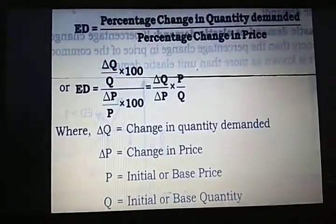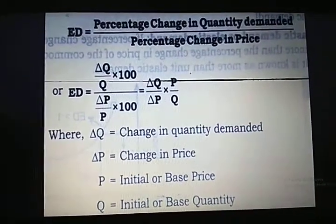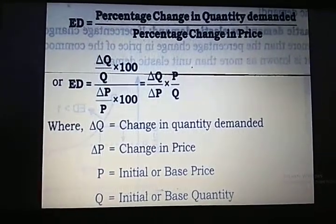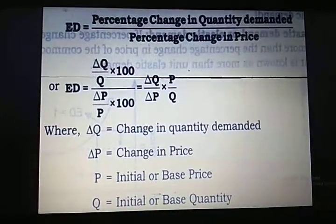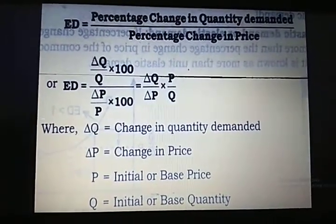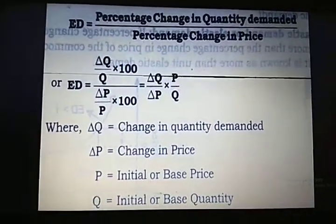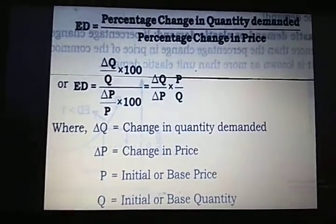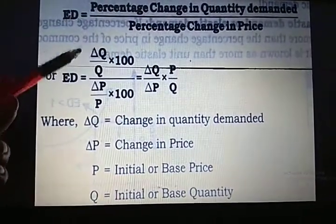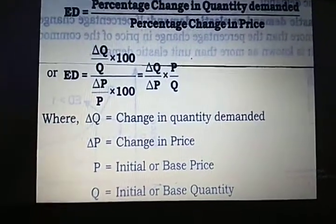For example, suppose the quantity demanded at a price of rupees 5 is 100 units. When the price rises to rupees 6 per unit, the quantity demanded is 80 units. So 80 is your new quantity Q1 and 100 is your old quantity Q. Delta Q, the change in quantity, will be Q1 minus Q, that is 80 minus 100, which equals minus 20.